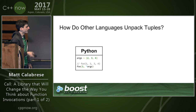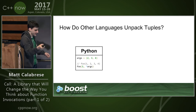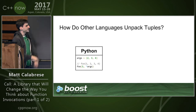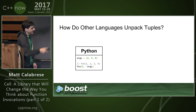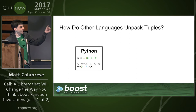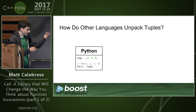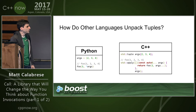Moving on to slightly more complicated cases: Python is really powerful in that you can expand a tuple in any arbitrary place in an existing argument list. For instance, if you have a known concrete argument first and only want the trailing arguments expanded, you just write 'one, *args' and it works. In C++, you'd have to either use tuple_cat or create a lambda to achieve the same thing.